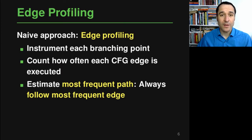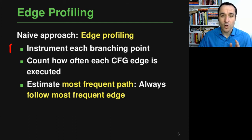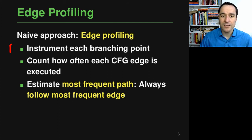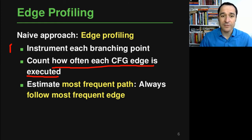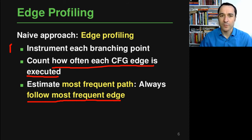One idea you might have is called edge profiling. This approach starts by counting how often each edge in the control flow graph is executed. In practice you would instrument every branching point so that you know which edge is actually taken, and at the end you know how often each control flow graph edge is executed. Given these individual edge counts, one could then estimate the most frequent path by always following the most frequent edge from the start node to the exit node.